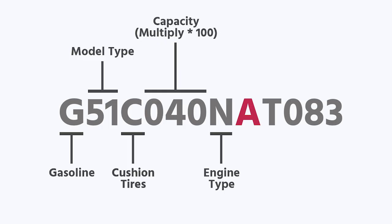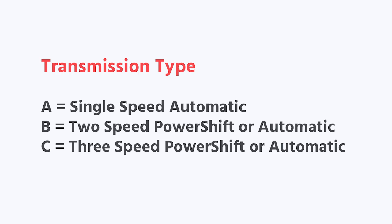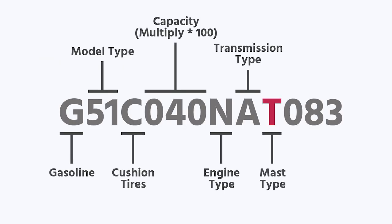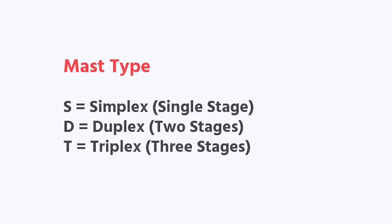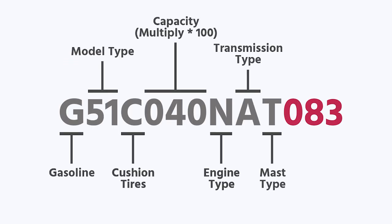A is going to be automatic — single speed automatic. T is telling you the mast type; in this case it's a triple stage. If it is a D, it's a duplex; if it's an S, it's a simplex single-stage mast. And then the 0-8-3 is your mast height collapsed in inches — it tells you it's an 83-inch mast.